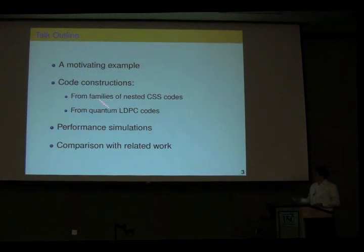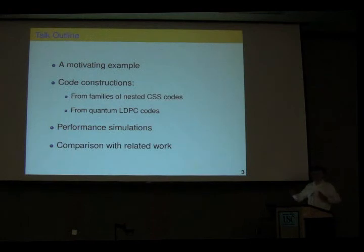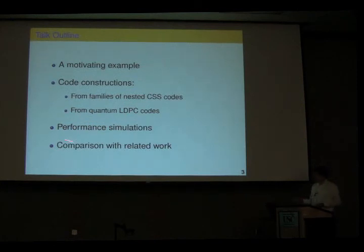What I want to do, and this will be the bulk of the talk, is present a few constructions of quantum codes — stabilizer codes which exploit this asymmetry. These codes will have a very natural imbalance towards the Z errors. I will give a bunch of constructions of such codes and also present performance simulations we did. At the end, if there's enough time, I will compare this with other approaches which have been recently proposed.